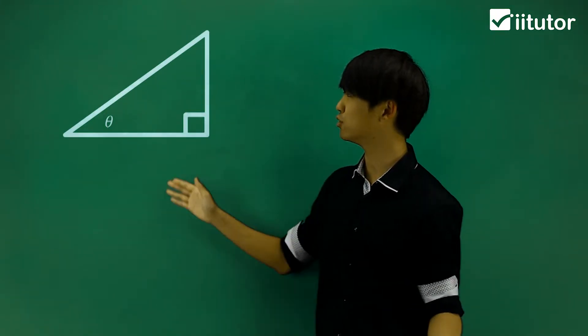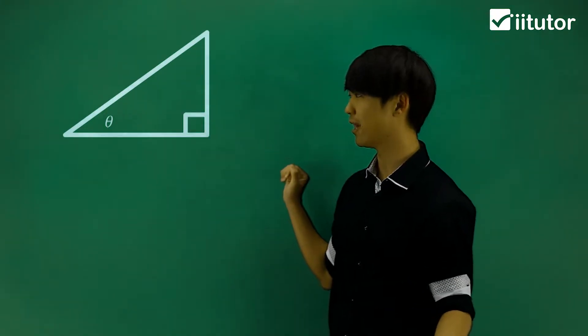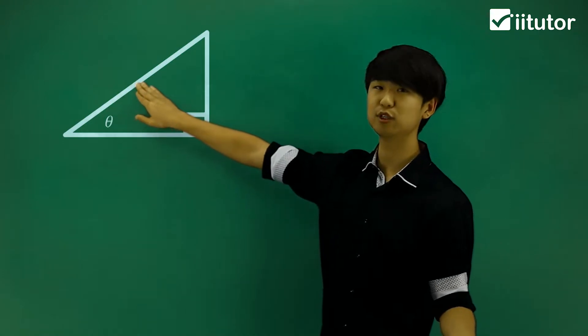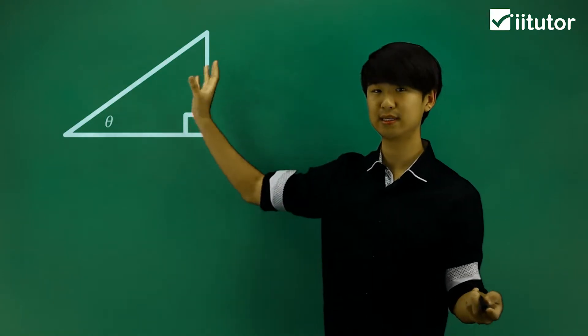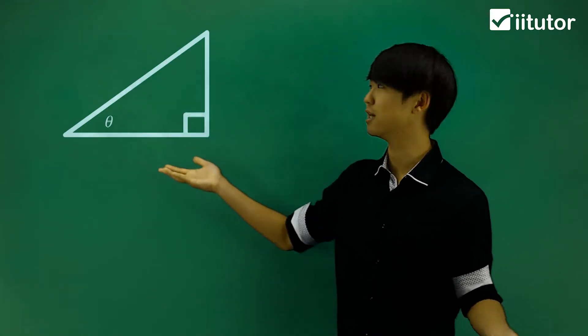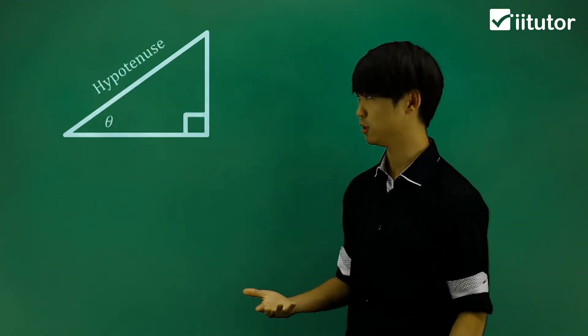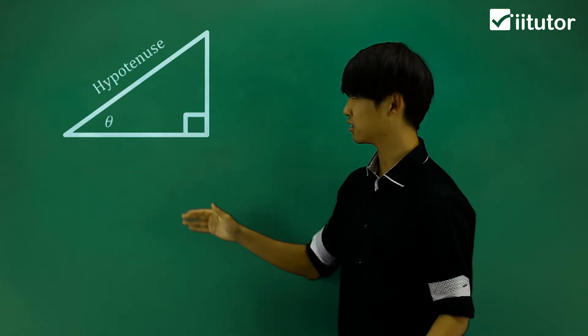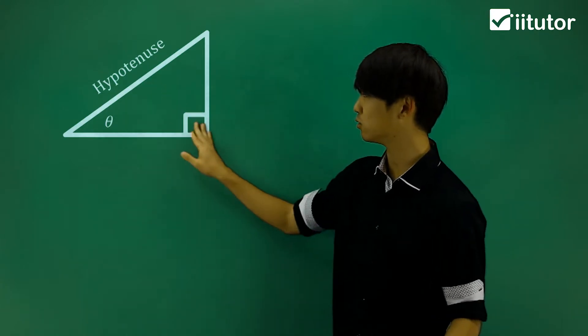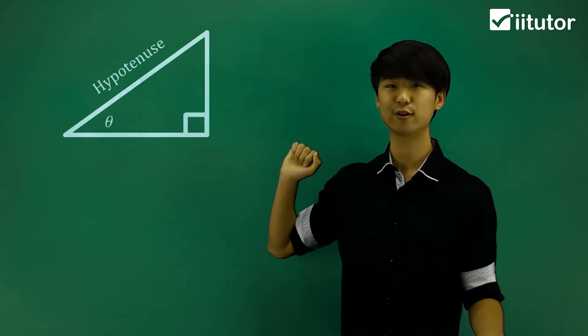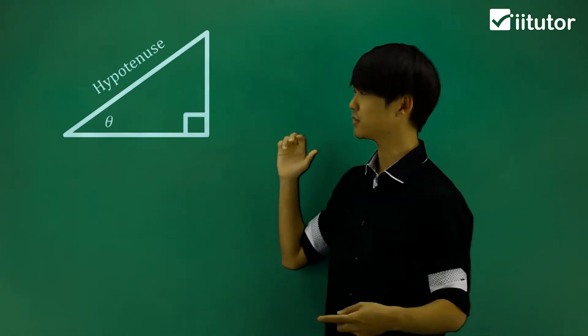So let's try and label the side lengths of this right-angled triangle. The most basic one is the longest side, which we usually call the hypotenuse. That's the longest one, and it's also opposite to the right angle.